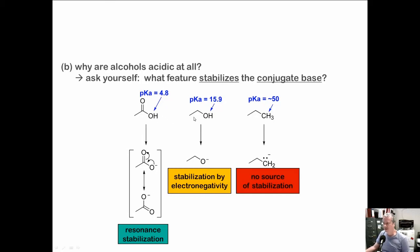The key principle: when thinking about acidity in organic chemistry, always think about what stabilizes the conjugate base. The correct answer to 'why is this acidic?' is not just 'resonance' — it's 'resonance stabilization of the conjugate base.' Here, it's stabilization of the conjugate base by the electronegativity of oxygen. It's always something about the conjugate base that causes acidity.